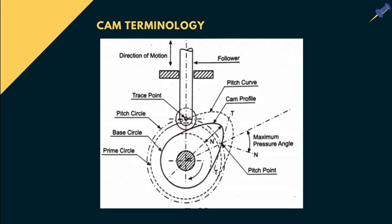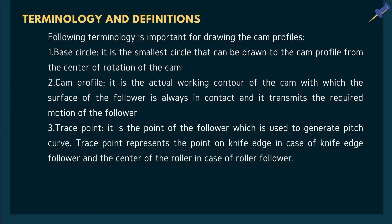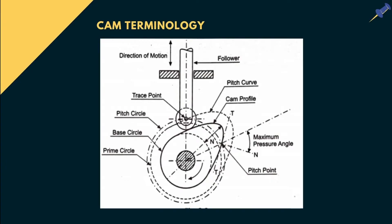This is the diagram of CAM terminology. You can see the direction of the follower's motion, which is oscillating or reciprocating. Here, the follower is a roller type follower. We will discuss follower types in detail in the next point. You can also see other features like base circle, CAM profile, pitch circle, and many more. For more clarification, let's see the standard definitions of these terms.